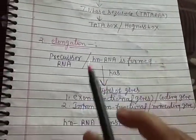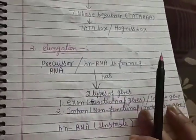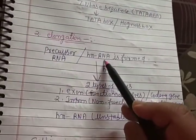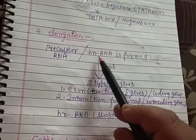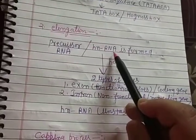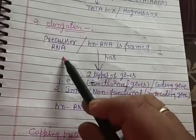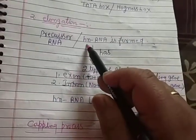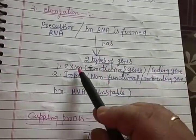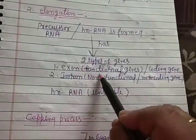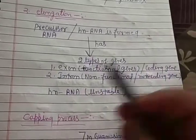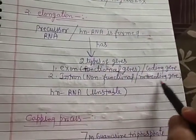The next stage is elongation. During elongation, RNA polymerase II provides help to form hnRNA. This hnRNA is first formed in eukaryotic transcription and is known as primary transcript RNA or precursor RNA. HnRNA consists of two types of genes: exons and introns. Exons are functional/coding genes; introns are non-functional/non-coding genes. HnRNA is unstable.